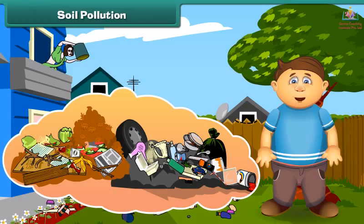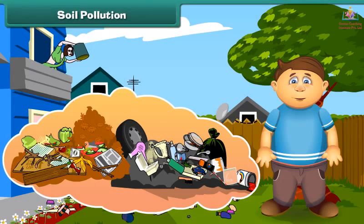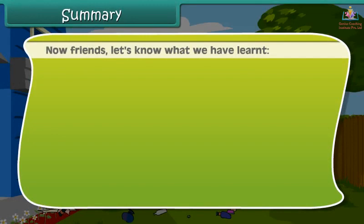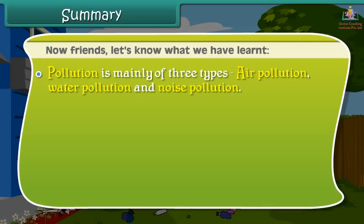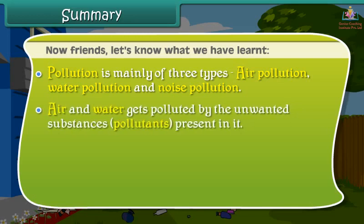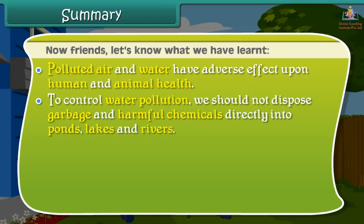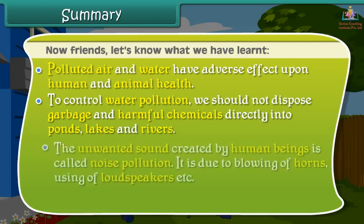Summary. Pollution is mainly of three types: air pollution, water pollution, and noise pollution. Air and water get polluted by unwanted substances called pollutants. Sewage from homes and wastes from factories are the main sources of water pollution. Polluted air and water have adverse effects on human and animal health. To control water pollution, we should not dispose garbage and harmful chemicals directly into ponds, lakes and rivers. The unwanted sound created by human beings is called noise pollution, caused by blowing of horns, using loud speakers, etc. The spoilage of soil quality is called soil pollution.